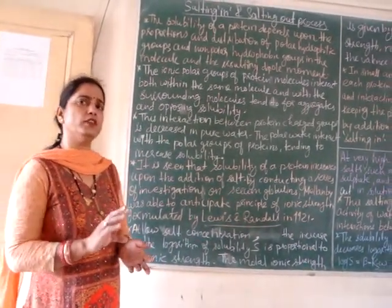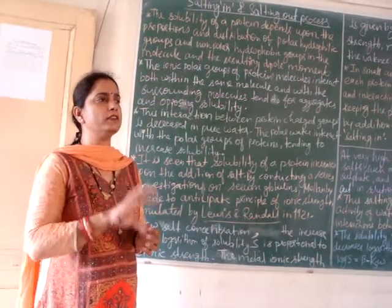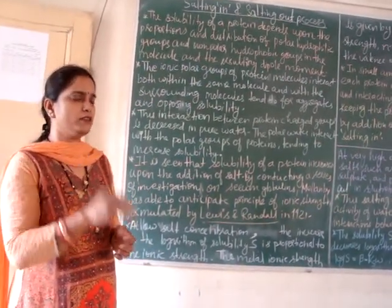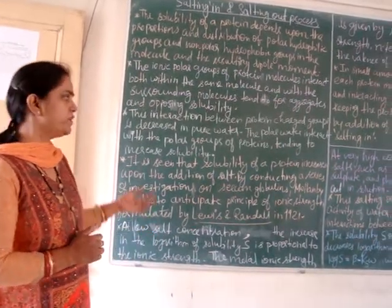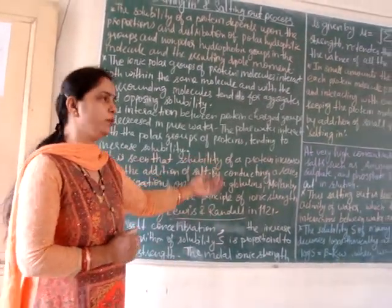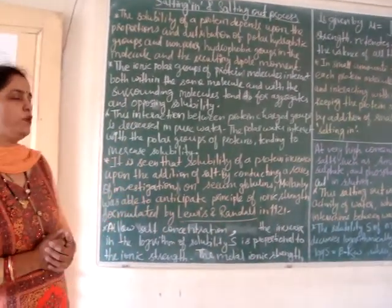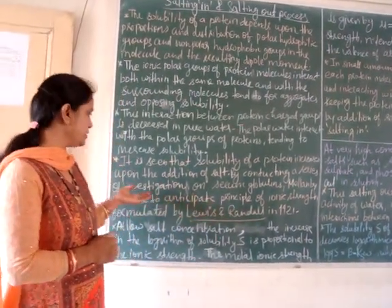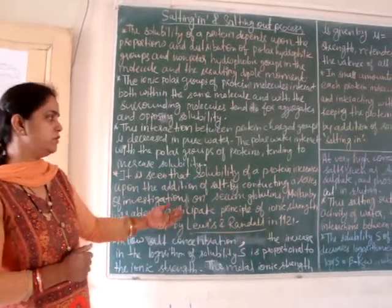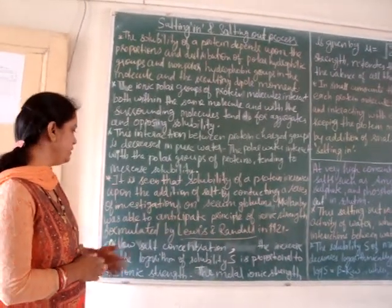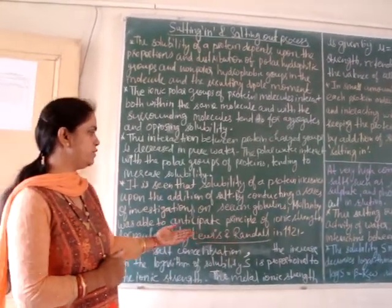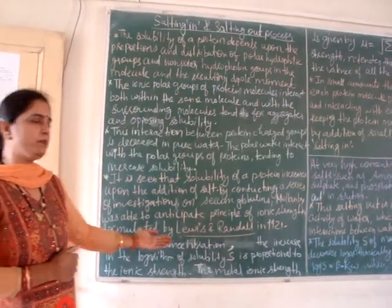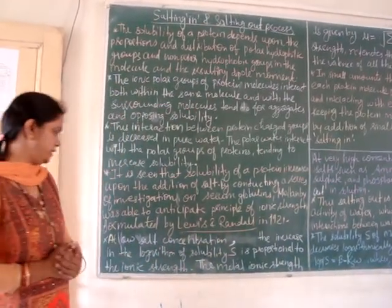That means the solute-solute interaction decreases and solute-solvent interaction increases when we dissolve protein in pure water. It is seen that the solubility of a protein increases upon the addition of low salt concentration. By conducting a series of investigations on serum globulin, Mellon was able to anticipate the principle of ionic strength, later formulated by Lewis and Randall in 1921.